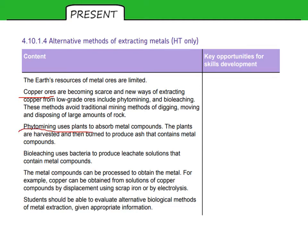Phytomining uses plants to absorb metal compounds. And bioleaching uses bacteria. And you need to be able to describe both these processes.